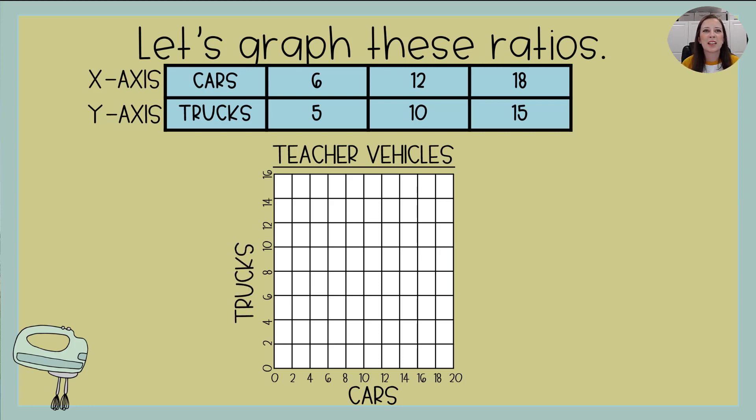So here the first one is six cars for five trucks. So on the cars on the x-axis, I'm moving over to six. And then I'm moving up to five on trucks. But wait a minute. There's not a five over there. Well, where would five be? You got it. Between four and six. So that's where I'm going to put my point. All right. The next one is 12 to 10. So I'm going over 12 and up to 10. And then last but not least, 18 to 15. And this is another one that's going to fall in the middle. And that's okay. So that is how you take a ratio table and graph it.